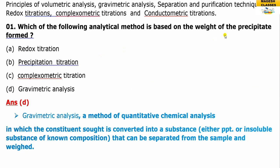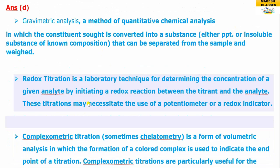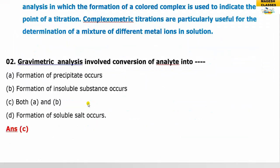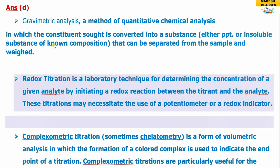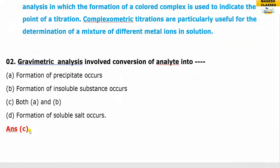Question two: gravimetric analysis involves the conversion of the analyte. The precipitate — that is, the insoluble substance — is formed. The analyte is first converted into an insoluble substance of known composition, so the answer is C.